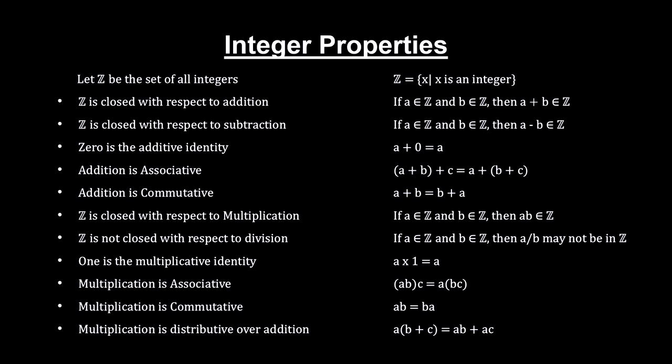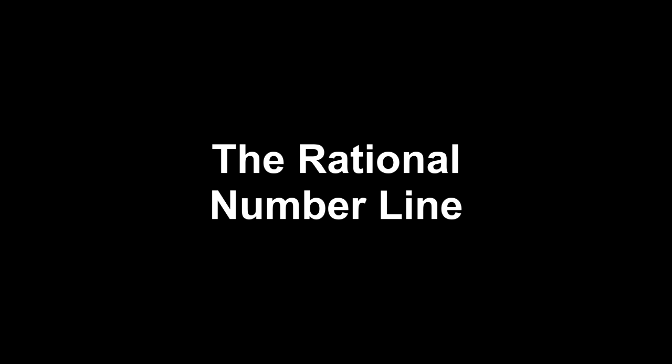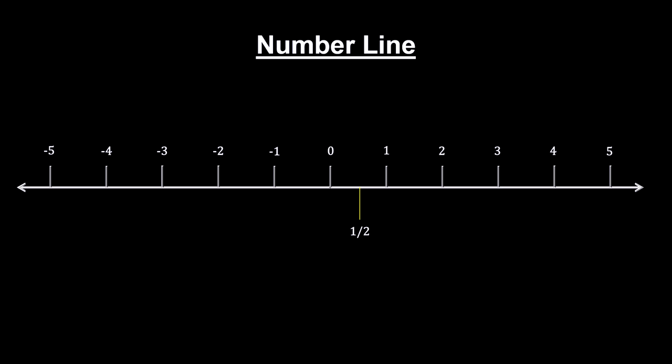When we include zero and negative numbers, we get the integer number line. The set of integers adds closure for subtraction. The set of integers is not closed with respect to division. 1 divided by 2 is not in the set of integers. To include these and make the set closed with respect to division, we need to add all the rational numbers. The numbers that can be expressed as a ratio of integers, where the denominator is not zero.